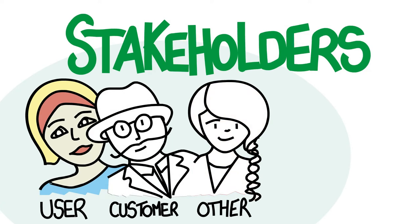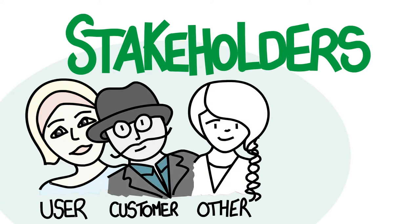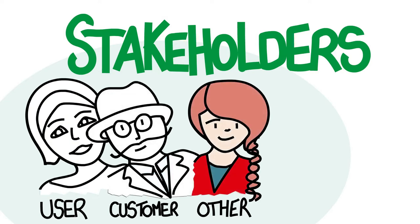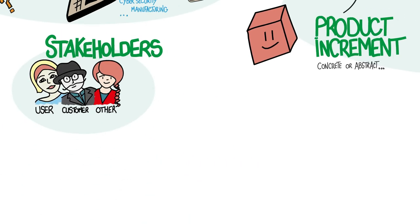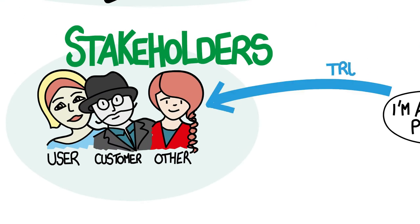A product is built for its stakeholders, and most development efforts have many of them. Two of the most important are the users — the people who will actually use the product — and the customers — the people or entities who actually pay for the product. Many other people could be involved as well. Without stakeholders there would be no product. Stakeholders usually appreciate having a working increment frequently; this virtually eliminates delivery risk.